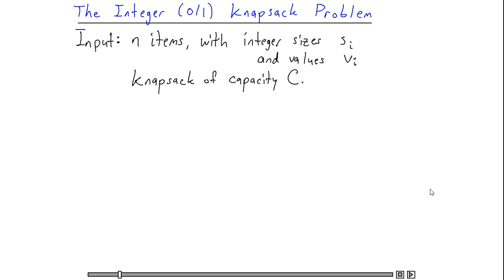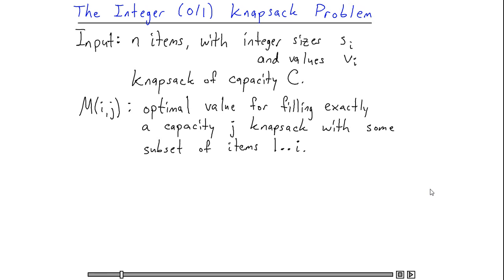My dynamic programming subproblems will be the following. I'm going to let m of ij denote the optimal value I can obtain if I fill up exactly to capacity a knapsack of capacity j with just a subset of the items from 1 up to i. Now, we could have also omitted this exactly here and also solved the problem, but I think it simplifies things just a little bit.